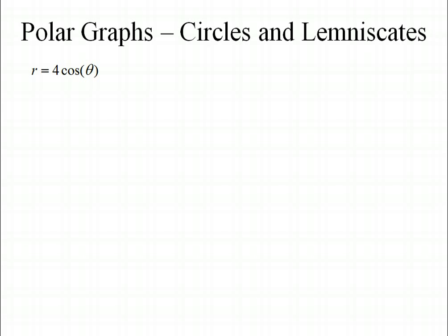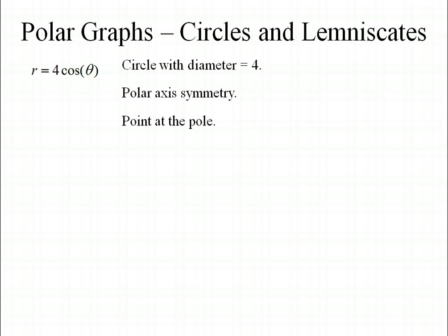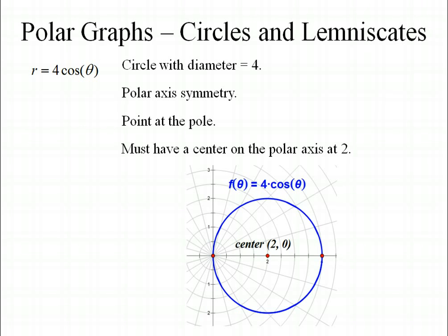Let's try to graph one. Suppose we had r equals 4 cosine theta. We know this is going to be a circle that has a diameter of 4. We know it's going to have polar axis symmetry since we're using the cosine. We know it's going to have a point at the pole. And then we can conclude that the center of the graph must be on the polar axis at 2. That's probably enough for you to get a sketch of your graph, but you might want to verify some points as well.